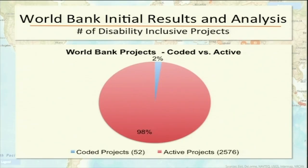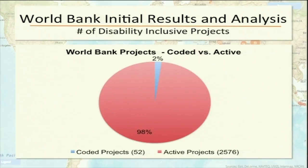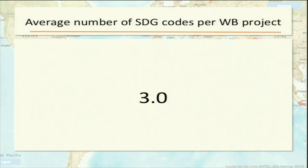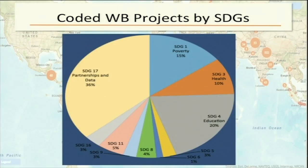I'm going to go over the World Bank initial results and analysis. First, all findings are preliminary — this is a pilot study. We looked at the World Bank's whole active portfolio and coded 2% of those projects as inclusive. The average number of codes given was three per project. This is how it broke down by SDG.